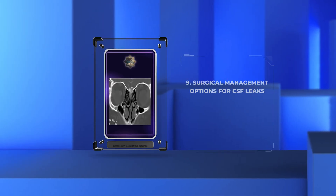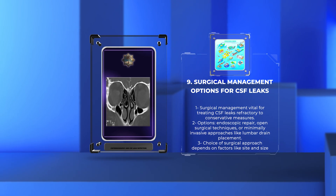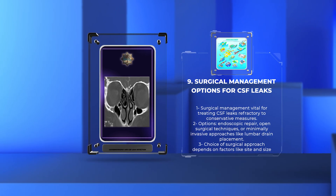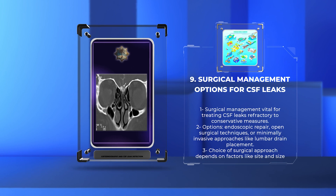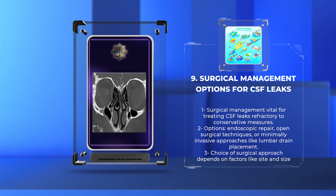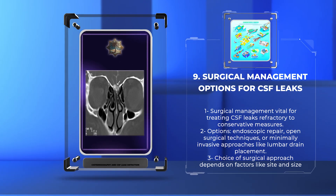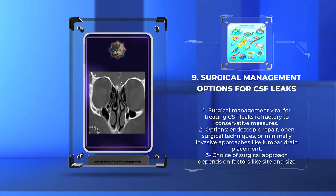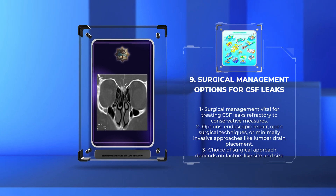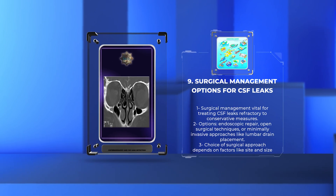Surgical management plays a vital role in treating CSF leaks that are refractory to conservative measures. Options include endoscopic repair, open surgical techniques, or minimally invasive approaches like lumbar drain placement. The choice of surgical approach depends on various factors, such as the site and size of the leak, patient comorbidities, and the surgeon's expertise.